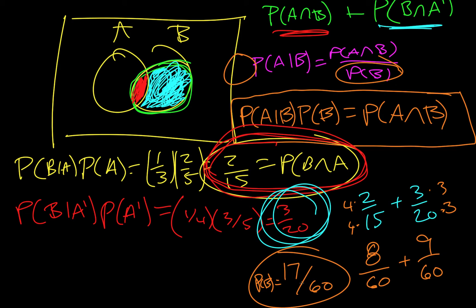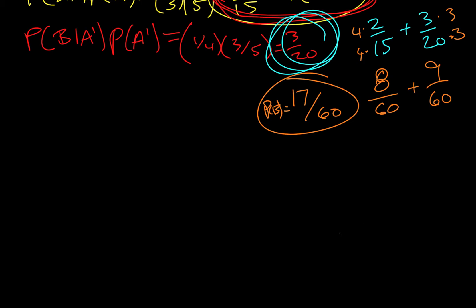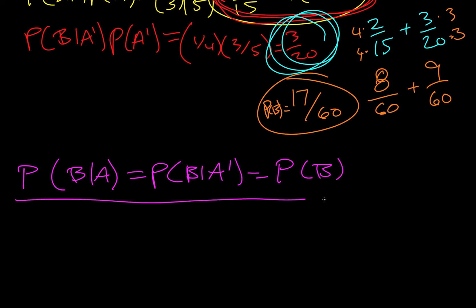Okay so that answered the first part. Now the second part says are A and B independent events, justify your answer. Well, we have to explain this a little bit before we start it. So if P of B given A is equal to P of B given not A and equal to P of B, then we have independent events.